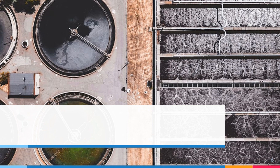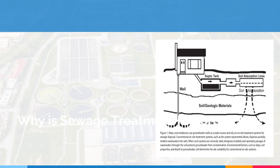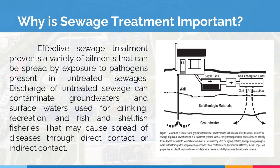So future engineers, sit back and learn with us. On-site sewage treatment alternatives. Why is sewage treatment important? Effective sewage treatment prevents a variety of ailments that can be spread by exposure to pathogens present in untreated sewage. Discharge of untreated sewage can contaminate groundwaters and surface waters used for drinking, recreation, fish, and shellfish fisheries, which may cause spread of disease through direct or indirect contact.